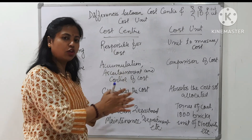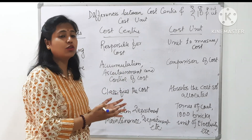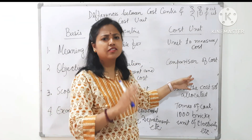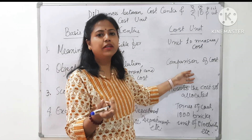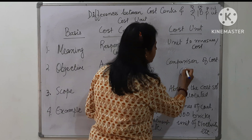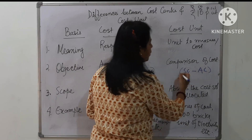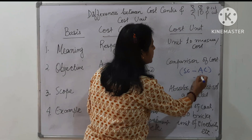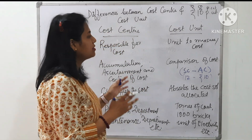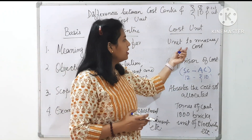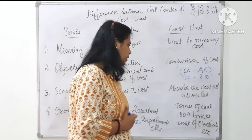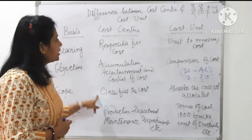Next comes objective. In the cost center, the objective is that we try to accumulate all the cost and ascertain what the cost is. This center is also responsible for control of cost. Whereas the cost unit doesn't have such responsibility. The cost unit is simply a means by which I can compare costs — I compare the standard cost with the actual cost. So I express the cost in terms of, say, rupees 10 per unit and compare it with the standard cost.